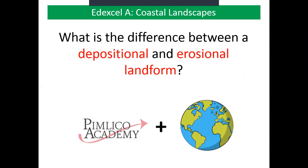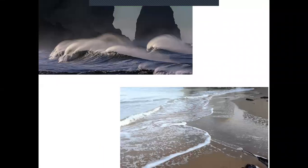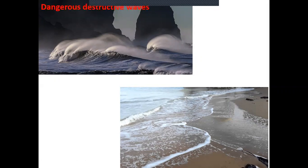First of all, we need to remind ourselves of the different types of waves. Here are two pictures of waves. The top left one shows very powerful waves — you wouldn't want to go swimming here; these are our dangerous destructive waves. The bottom right corner shows a very nice calm sea, the kind you'd like to go swimming in. These are our calm constructive waves.